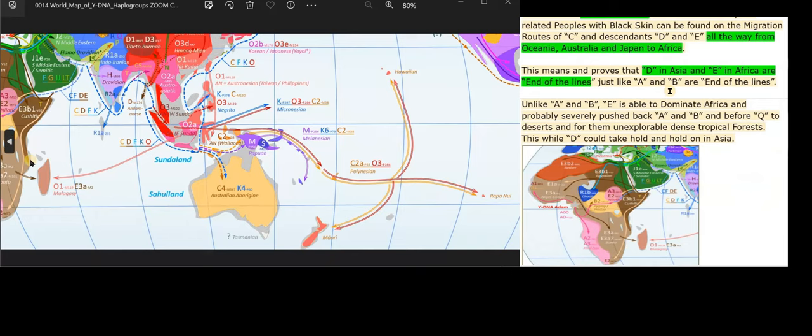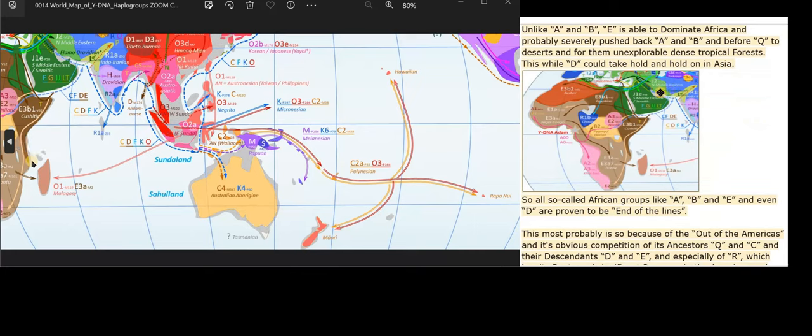This means and proves that D in Asia and E in Africa are end of the lines just like A and B are end of the lines. Unlike A and B,